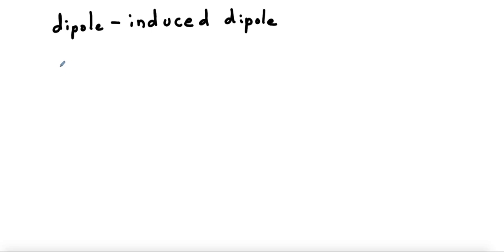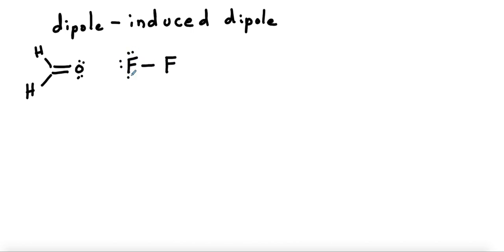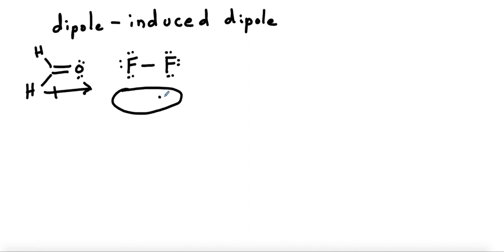If we have a molecule that's polar — let's stick with formaldehyde — we have this molecule with a permanent dipole moment. Now imagine a second molecule that doesn't have a permanent dipole, like fluorine. Since the two atoms in the molecule are the same, this bond is not polar and there's no dipole moment. However, we have a cloud of electrons here, and when confronted with this dipole, the negative end is closer and it's going to push the electrons over a bit. So the distribution of electrons shifts to having a little more negative on one side and a little more positive on the other. We say this molecule is polarized.